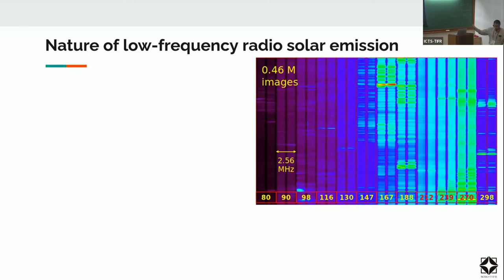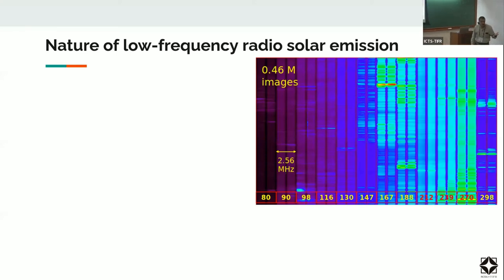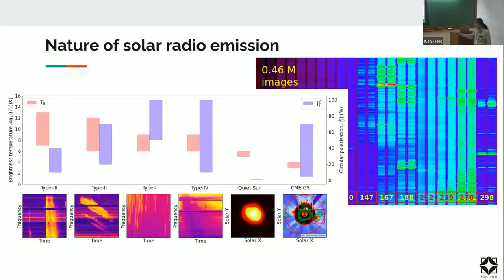This shows integrated flux density from the sun, with frequency on one axis and time on the other at half-a-second time resolution. All these horizontal stria you see are changes in emission from the sun. As opposed to the visible sun, which looks rather boring — and please don't look at the sun directly — at low radio frequencies it's extremely dynamic. There are many different kinds of emissions with very different structures in the frequency-time plane.